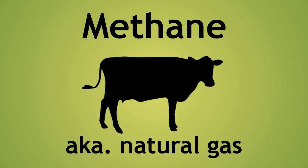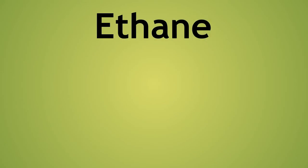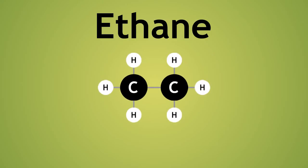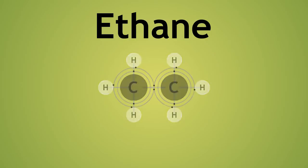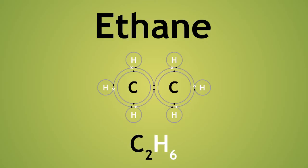The next molecule in the homologous series of alkanes is ethane, with 2 carbon atoms. As you can see, a single covalent bond is formed between the 2 carbon atoms, with 6 more hydrogen atoms covalently bonded to complete the molecule.